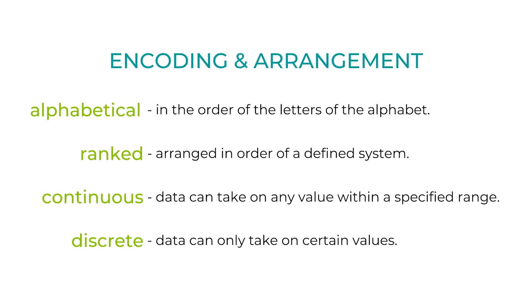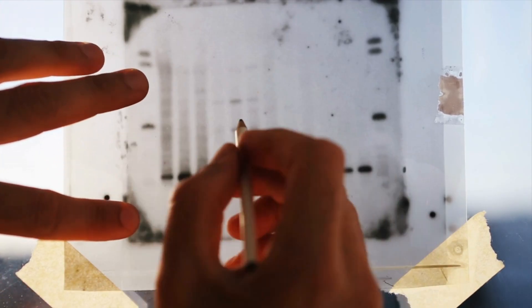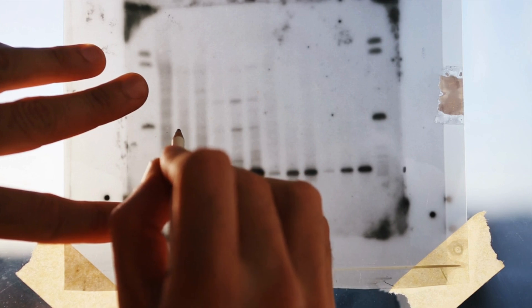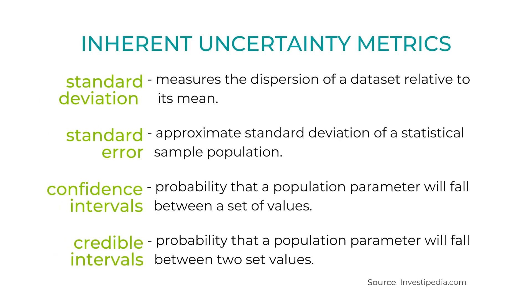A second aspect of understanding your data is how to encode or arrange it. Some examples of data arrangement include alphabetical, ranked, continuous, and discrete. Knowing the dimension and encoding of your data will help select the right approach when creating a visualization. It is also important to be transparent about the limitations of your data. You can avoid misleading when you are upfront about uncertainties inherent in your research. This can be accomplished by providing metrics such as standard deviation, standard error, confidence intervals, and credible intervals.